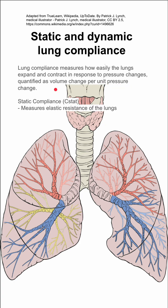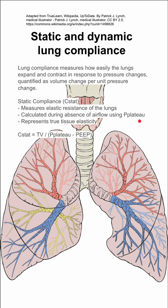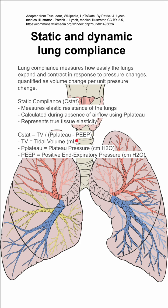There is static compliance and dynamic compliance. Starting with static compliance, or C-stat: it measures the elastic resistance of the lungs and is calculated during the absence of airflow using plateau pressure (P-plateau). It represents the true tissue elasticity. Static compliance equals tidal volume divided by plateau pressure minus PEEP, where TV is tidal volume, P-plateau is plateau pressure, and PEEP is positive end-expiratory pressure.